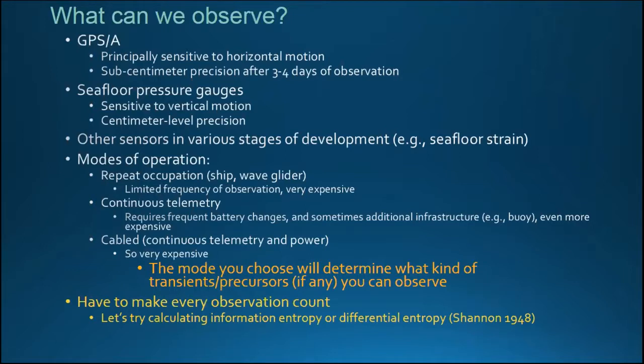Alternatively, you could use continuous telemetry, but this uses a lot of power, meaning frequent battery changes, and sometimes you need additional infrastructure like a buoy positioned over seafloor transponders — even more expensive. If you really want continuous data, you can cable these instruments for continuous telemetry and continuous power, and that is very expensive. The mode you choose will determine what kind of transients or precursors you can observe.